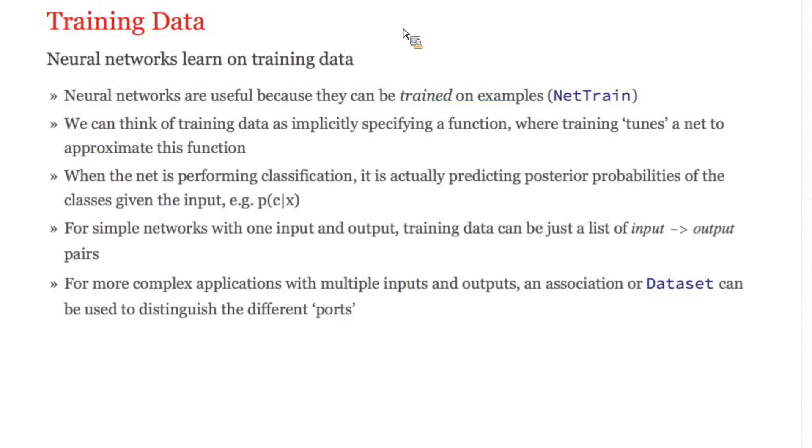Training a network is the process of showing the net lots of input-output examples and tuning the learned parameters so the net approximates the correct output when given a particular input. More precisely, this is known as supervised learning. We call the set of examples the training data, which you will need to provide as the second argument to net train. We don't have much time, so I'm not going to cover the phenomenon of overfitting, which is when a net effectively memorizes input output pairs instead of learning to generalize beyond the training data. It's the sort of AI equivalent of teaching to the test.